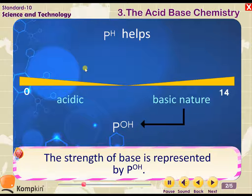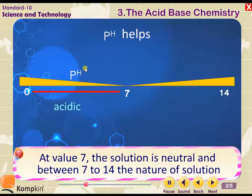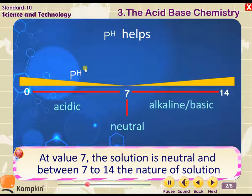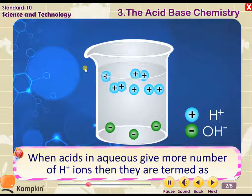The strength of a base is represented by pOH. When the pH value is between 0 to 7, the solution is acidic in nature. At value 7, the solution is neutral.